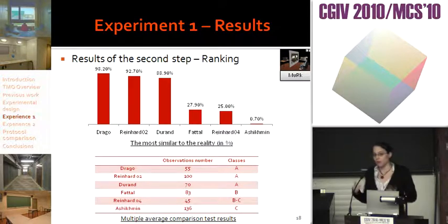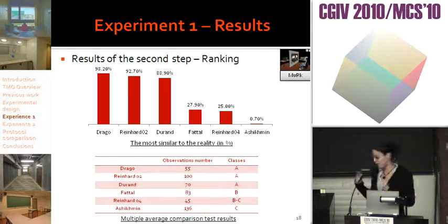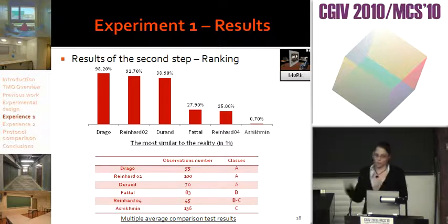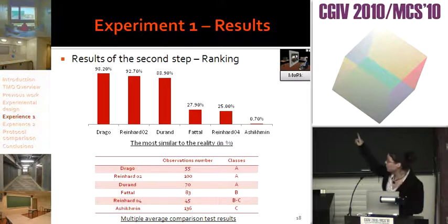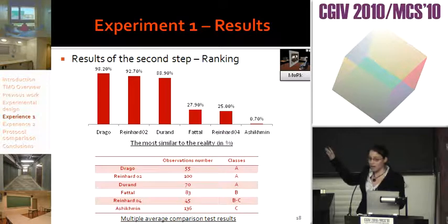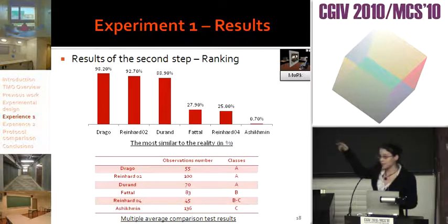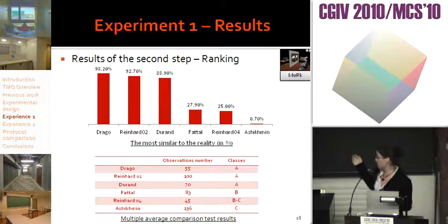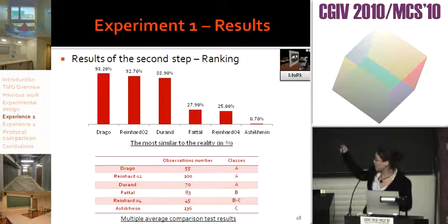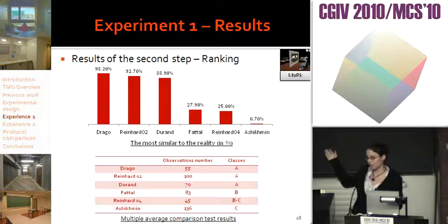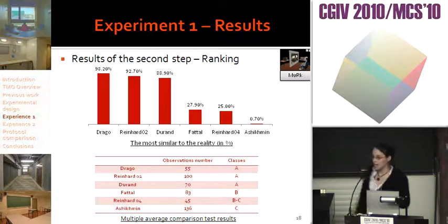For the second test, we computed the ratio of the number of times that the tone-mapped image for a given tone mapping operator is chosen as the most similar to reality over the total number of observations. Two groups appeared, and Drago, Reinhard 2, and Durand got the best results with a ratio over 88%. We also employed the multiple comparison test and they are in the best group A. Also, Reinhard 2 and Ashkhmin have the larger number of observations, so the results obtained for both are the most reliable.